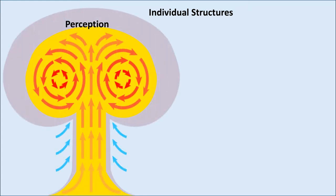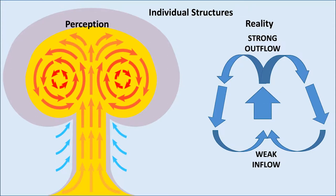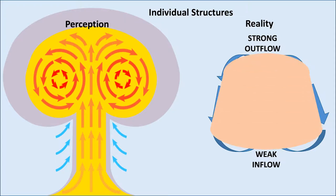It is normal to see that. Individual structures then. The perception is that this is what is occurring. The reality is a strong outflow at the top and a weak inflow towards the bottom, so it's more akin to this kind of shape.